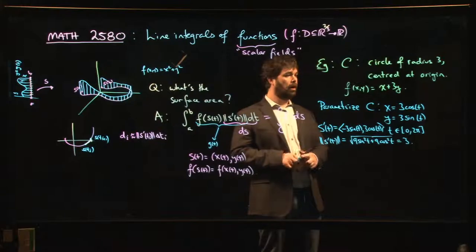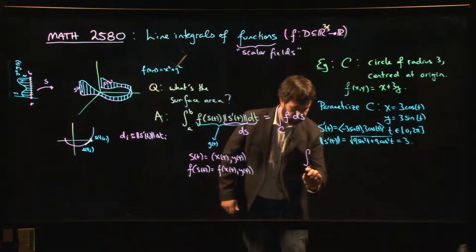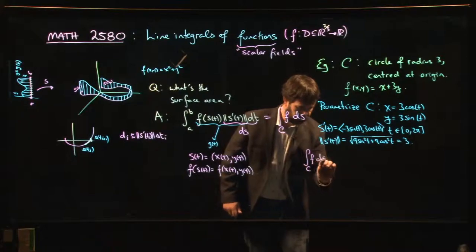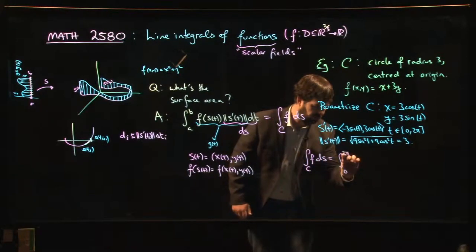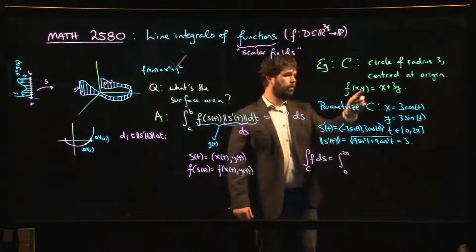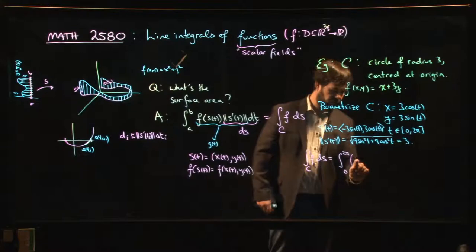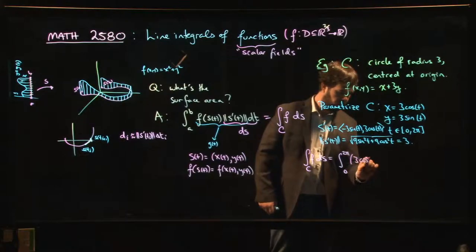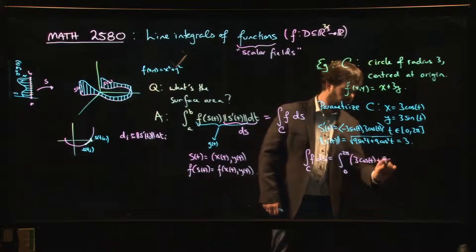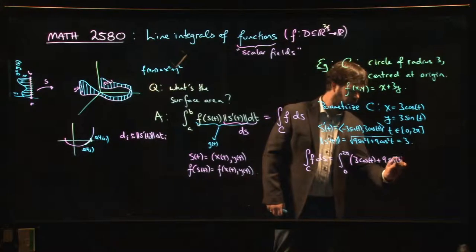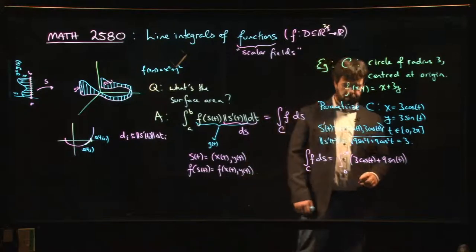So what does the integral look like? The integral over C of f·ds is going to be the integral from 0 to 2π. f(x,y)—so x is 3cos(t), that gives 3cos(t); y is 3sin(t), so that's 9sin(t). We multiply by the length of s'(t),